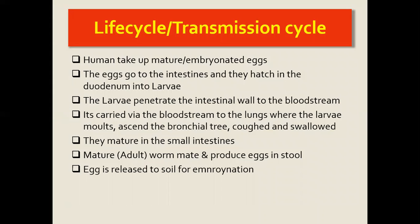The human ingests the embryonated or mature eggs. The eggs go to the intestines, where they hatch into larvae — mostly in the duodenum. The larvae penetrate the intestinal walls, enter the bloodstream, and follow it back to the heart, then into the pulmonary circulation, ending up in the lungs. In the lungs, the larvae continue maturing and molt.